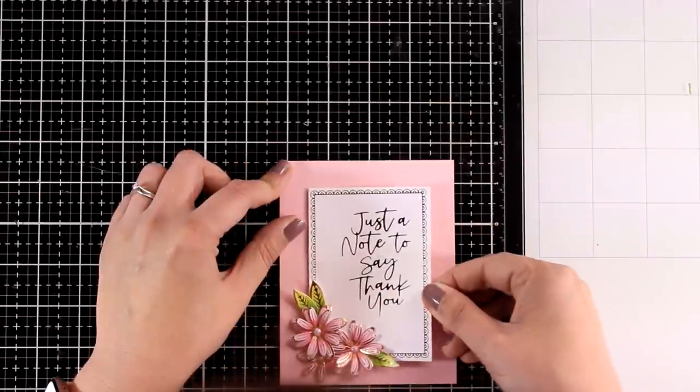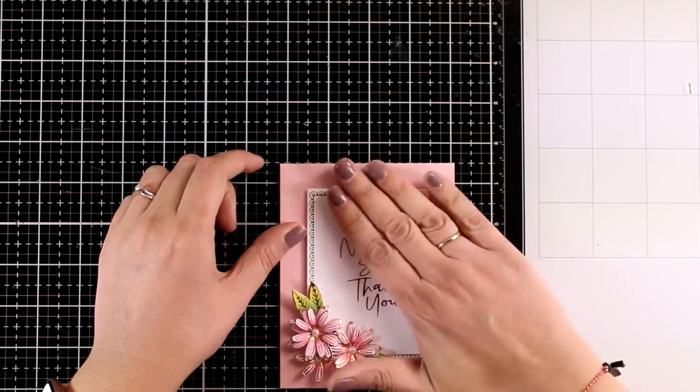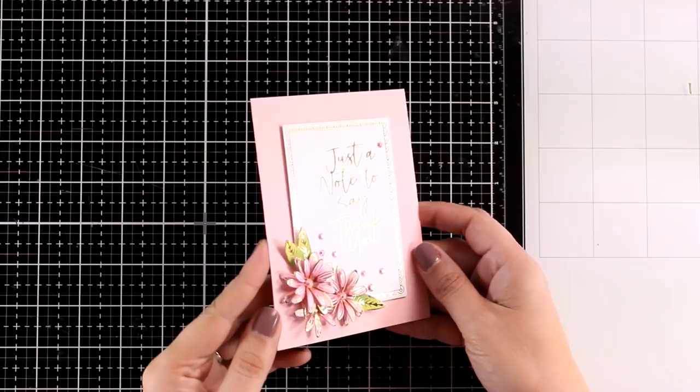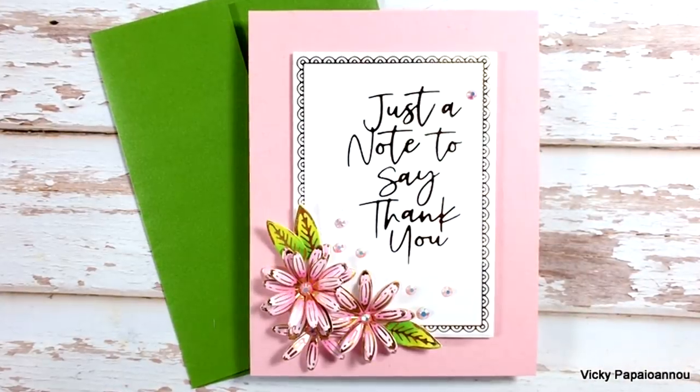I decided to stick this panel on top of a pink panel and I did use foam tape at the back so this is quite dimensional and then all I have to do is to stick that on top of a pre-folded card that's 4 1⁄4 by 5 1⁄2.